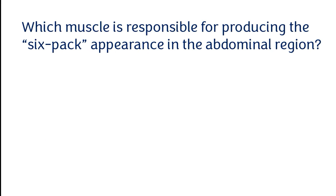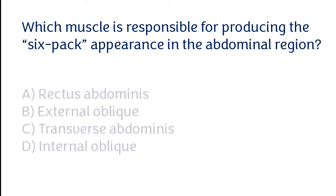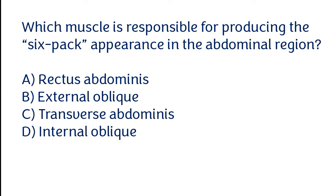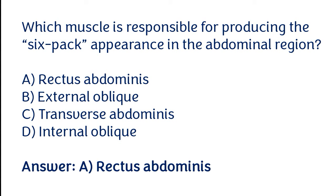Which muscle is responsible for producing the six-pack appearance in the abdominal region? Options: Rectus abdominis, External oblique, Transverse abdominis, or Internal oblique. The correct answer is option A — Rectus abdominis muscle is responsible for producing the six-pack appearance in the abdominal region.